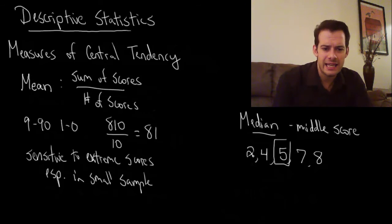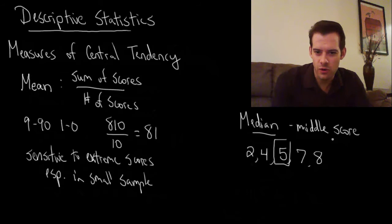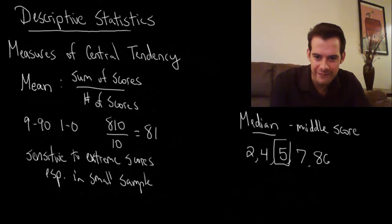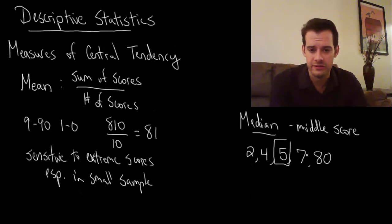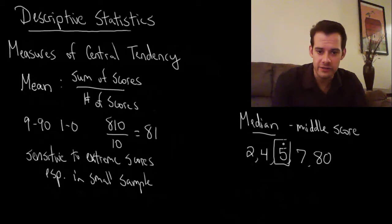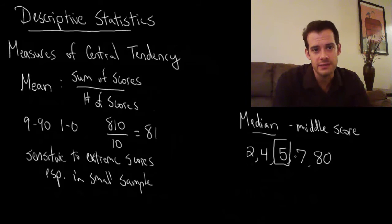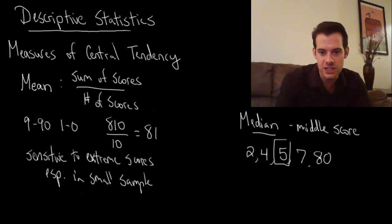We can see that the median is not so sensitive to extreme scores. I can change one of these scores — instead of eight, what if the highest score was all the way up to 80, totally far away from the other scores. In that case the median would still be five; it wouldn't be influenced by the fact that this score was extremely high.